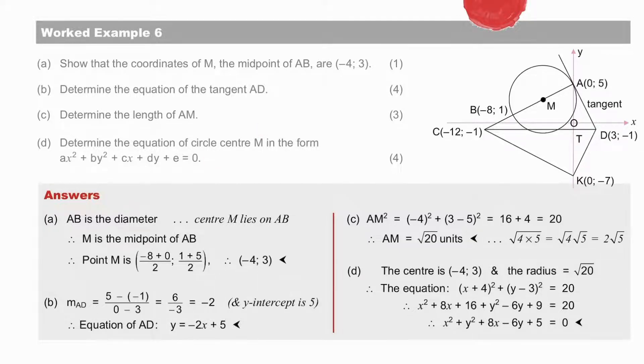And then the equation of circle center M in general form. The center is minus 4, 3, and the radius is the square root of 20. And therefore, the standard form is easily written down. From there, we multiply out to arrive at the general form. Check your answers.